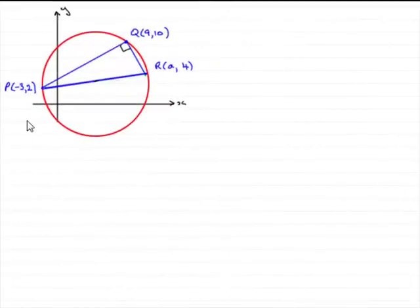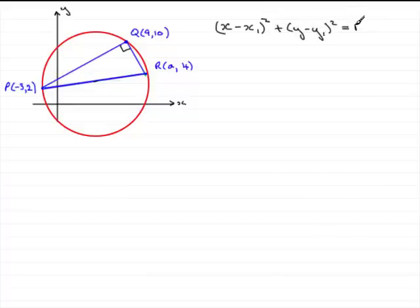Hi. Now in the last part of this question, we've got to find the equation of the circle. To do that, I'll remind you what the equation of a circle is first. We've got x minus x₁ all squared plus y minus y₁ all squared equals the radius squared, where x₁, y₁ is the coordinates of the center of the circle.